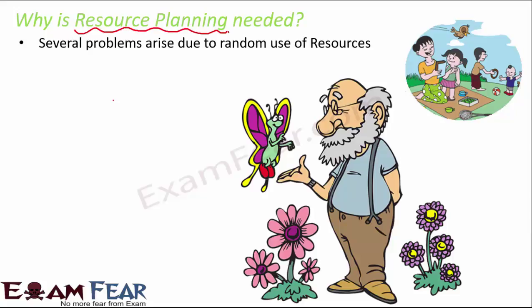The biggest question is: why at all is resource planning needed? There are several problems that could arise due to random use of resources. Resources are limited, and if we use them randomly we will face resource depletion. If we use all of them, our future generations will have nothing left. It is important that we use resources judiciously, and that is where resource planning plays a critical role.